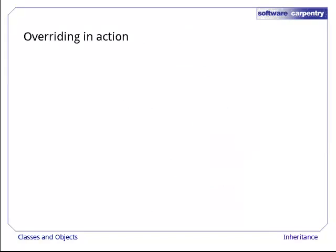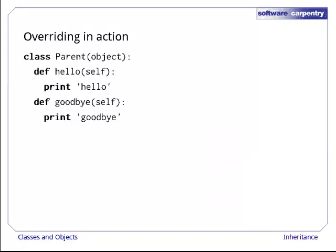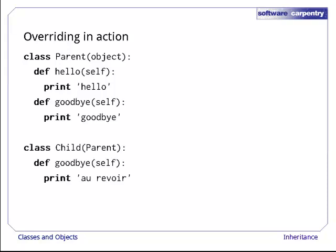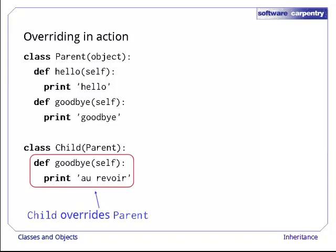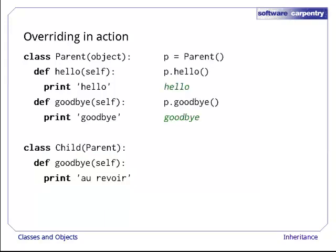Let's have a closer look at how overriding works. Here's a class called parent that defines two methods, hello and goodbye. And here's a class child that inherits from parent and defines its own goodbye method. That method overrides the one defined in parent because it has the same name. Now let's create an object of class parent and call its methods. Good. That works as expected.